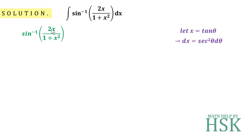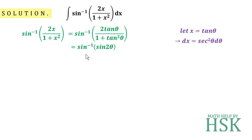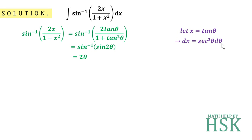Now placing x = tan θ in sin⁻¹(2x / (1 + x²)), I get sin⁻¹(2 tan θ / (1 + tan²θ)), which equals sin⁻¹(sin 2θ). The sin⁻¹ and sin cancel out — the inverse trigonometric function and trigonometric function dissolve — so I get 2θ. This complete value becomes 2θ, and dx becomes sec²θ dθ.